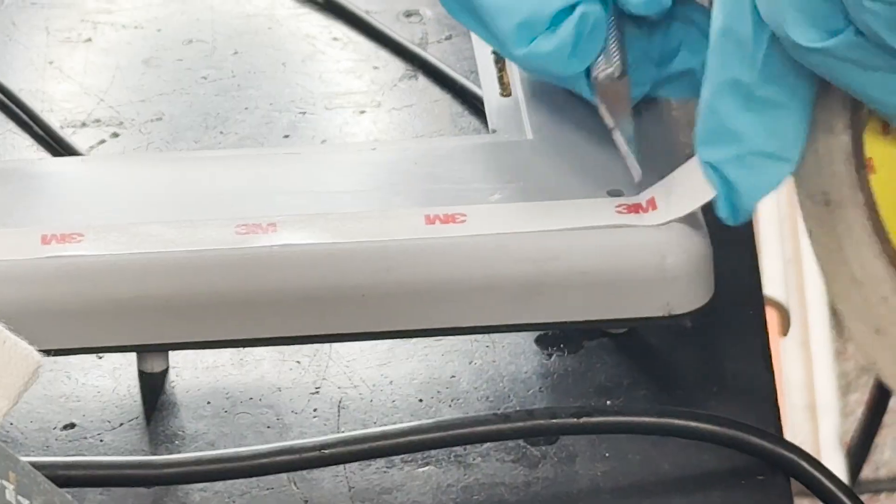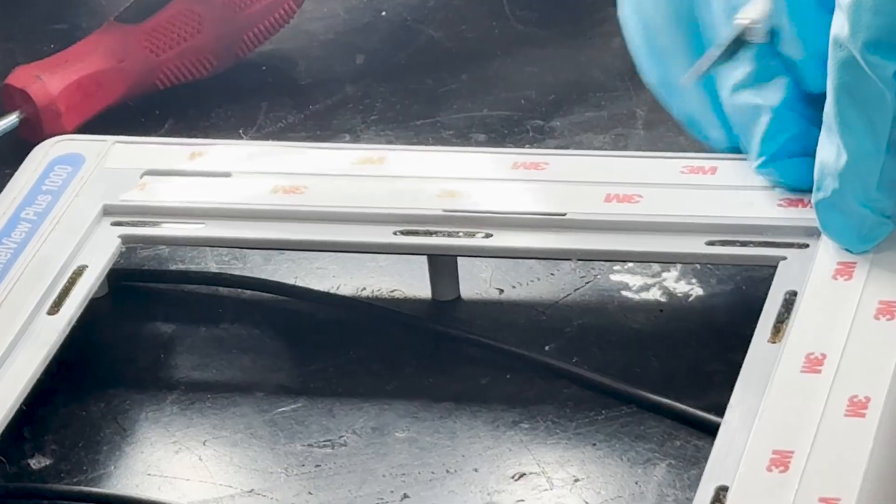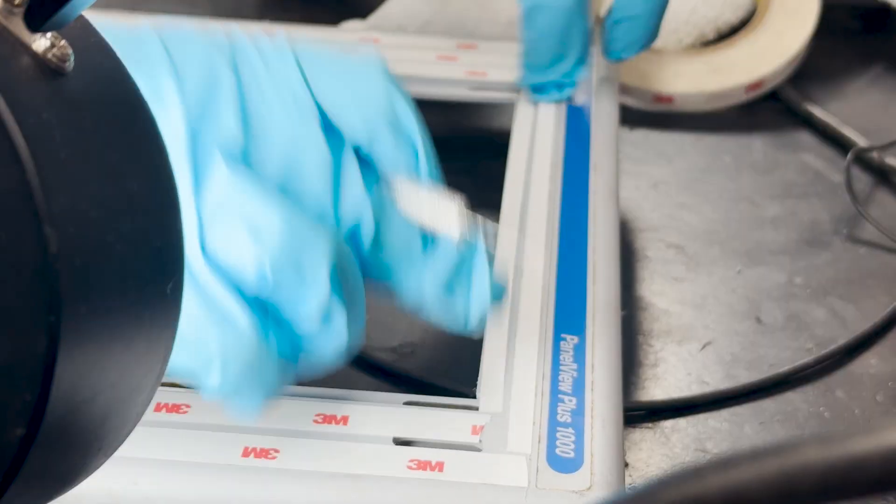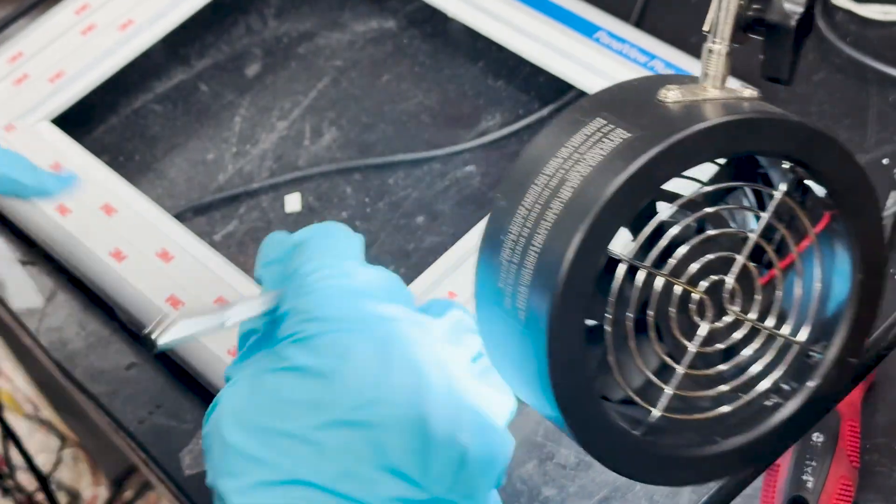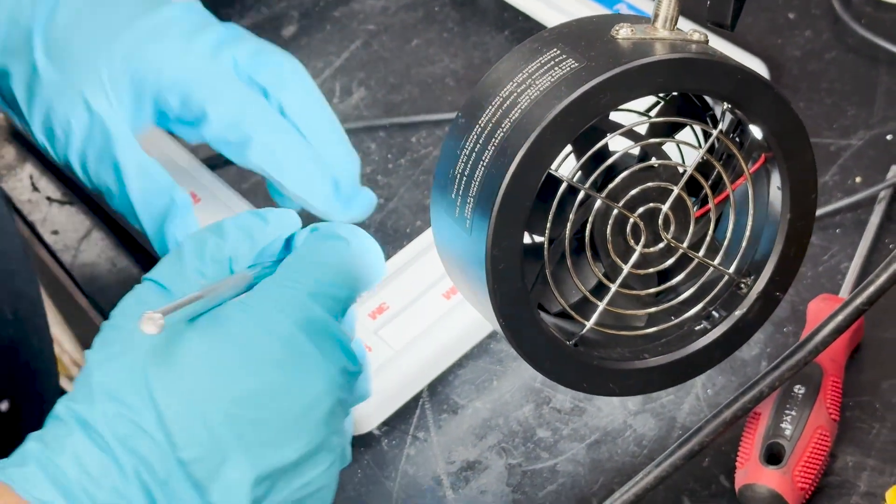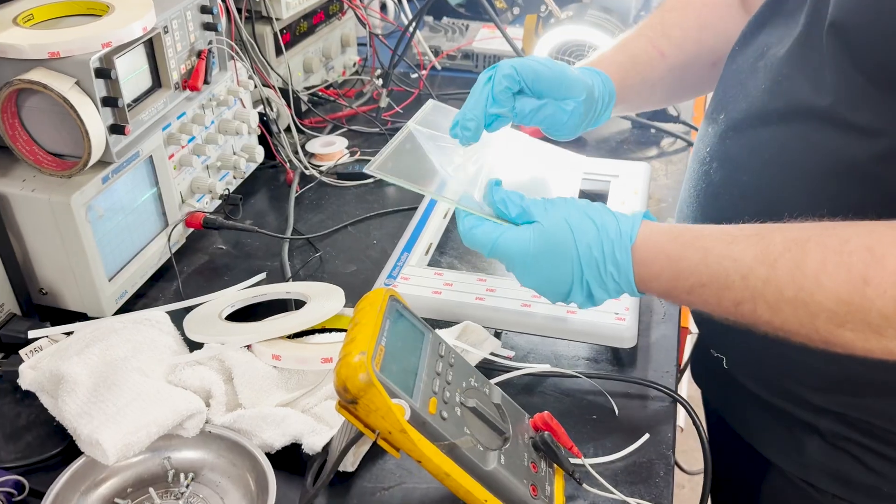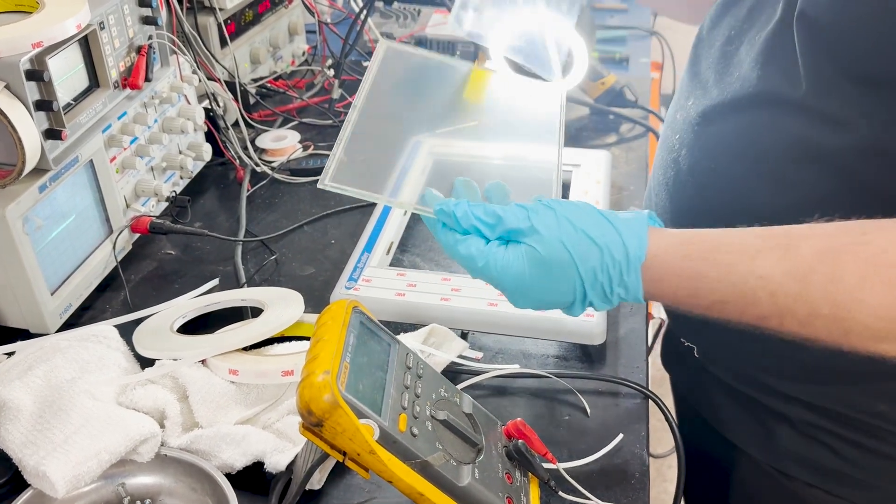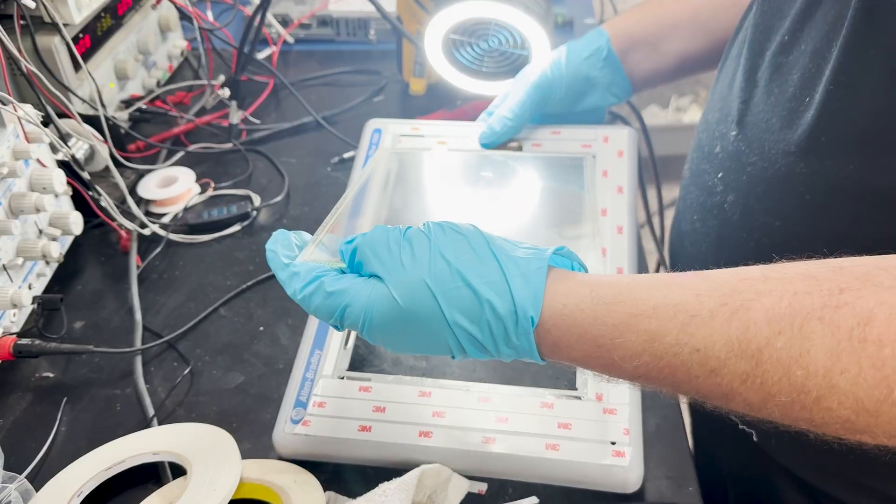We will now apply a controlled amount of adhesive to the touchscreen and insert it into the bevel. Now that all of the adhesives have been applied, we will insert the touch glass into the bezel, aligning it precisely with the reference points to guarantee optimal visual and functional performance.